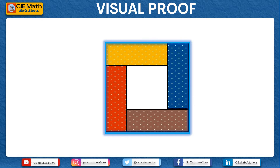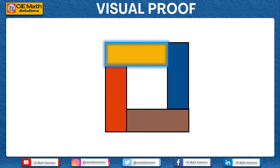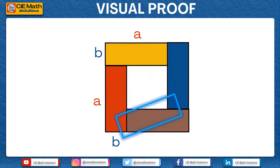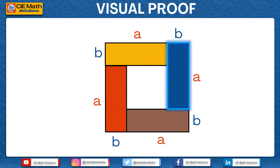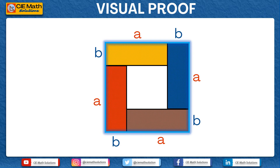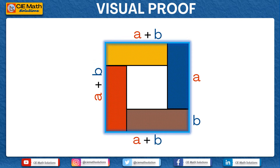Notice that the outer sides of the rectangles form a quadrilateral. Let us verify if this figure is a square or not. We can do this by labeling the sides of the rectangles on the outer part. The yellow rectangle has sides A and B, the red rectangle also has sides A and B, the brown rectangle has sides A and B, and the blue rectangle has sides A and B. The top part of this figure has side length equal to A plus B. The same case for the left side, the bottom part, and the right side — all equal to A plus B. We can then verify that the figure formed is a square with side A plus B.